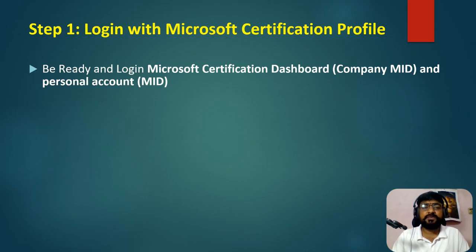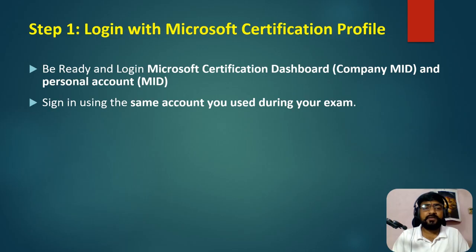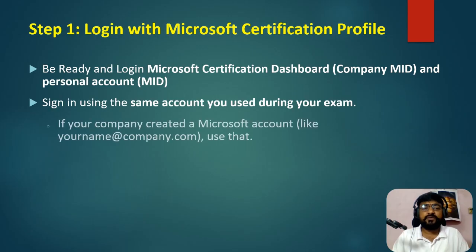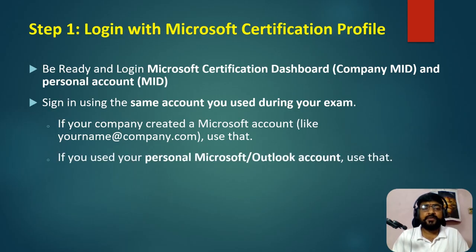For step one, you need two IDs ready: your company Microsoft account ID and your personal Microsoft account ID. Sign in using the same account you used for your examination. For example, if your company created a Microsoft account like yourname@company.com, use that for the company ID login. If you used a personal account like Outlook or Gmail, use that for the linking process.